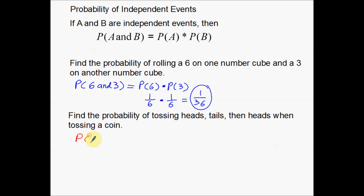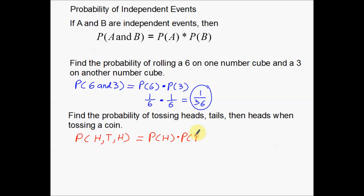So I know this is going to be an independent event. This is the probability of tossing heads, then tails, then heads on a coin. That equals the probability of tossing heads times the probability of tossing tails times the probability of tossing heads. We can have multiple events — more than two — as long as they're independent of one another, that's all that really matters.